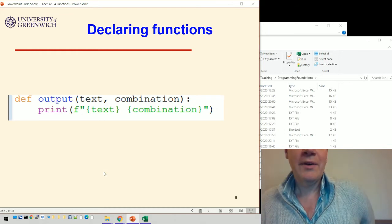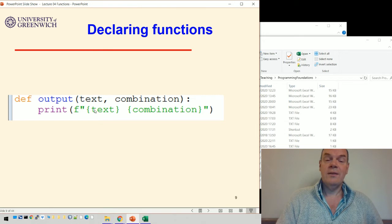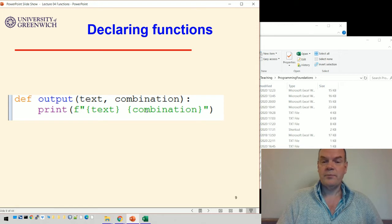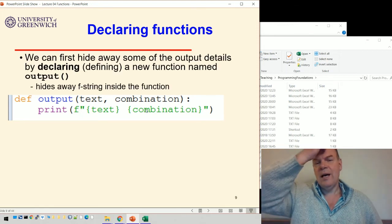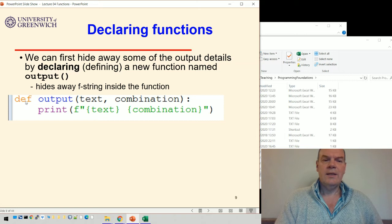First of all, we're going to have a function that does the output. We'll give it some text, we'll give it a number, and we'll get it to print that out. We're hiding away the f-string stuff by declaring this new function.